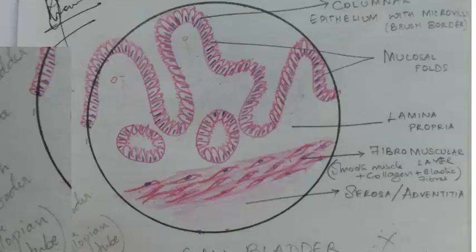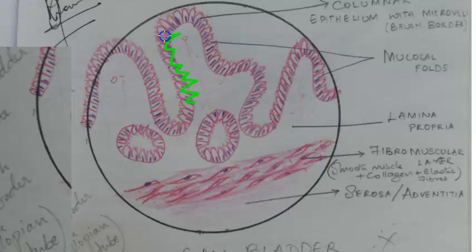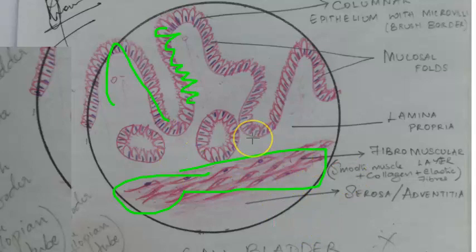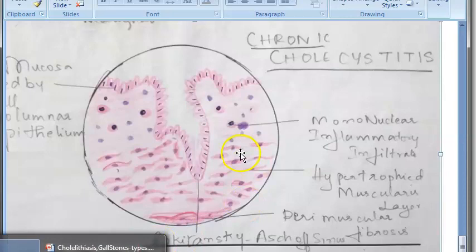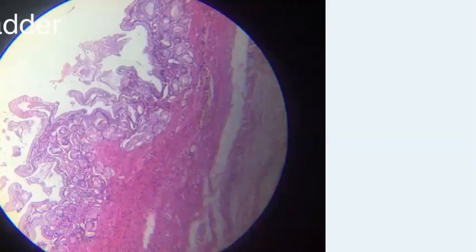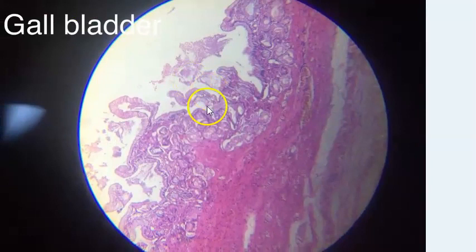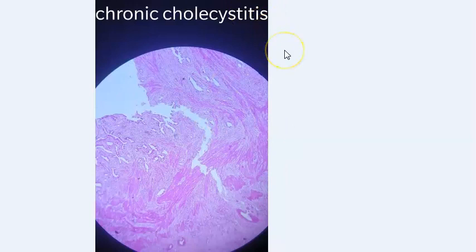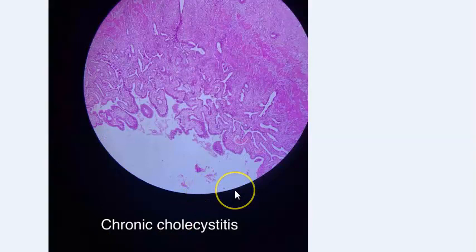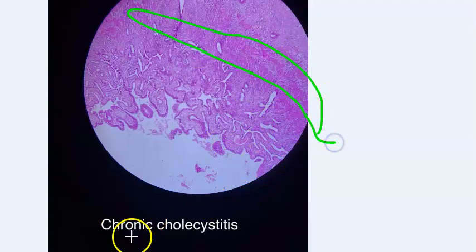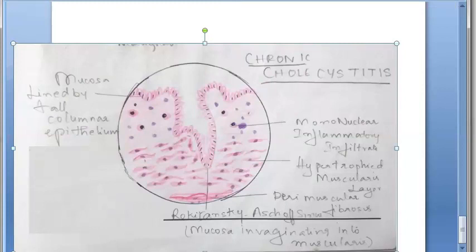Looking at the normal gallbladder for comparison: it has brush border columnar epithelium and a fibromuscular layer with no submucosa. In chronic cholecystitis, the columnar epithelium remains but the muscularis layer is hypertrophied. Histology images confirm hypertrophy of the muscularis layer in chronic cholecystitis.